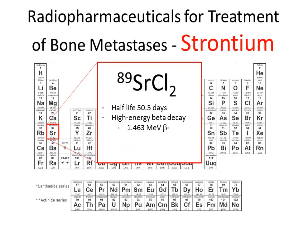Strontium-89 has a half-life of 50.5 days and a high-energy beta decay with an energy of 1.463 mega-electron volts. The higher the energy, the farther the beta particle travels before losing its energy. So one of the side effects of strontium was marrow suppression, because although it localizes to the cortex, you get several millimeters of travel of that beta particle, which does result in a degree of marrow suppression.